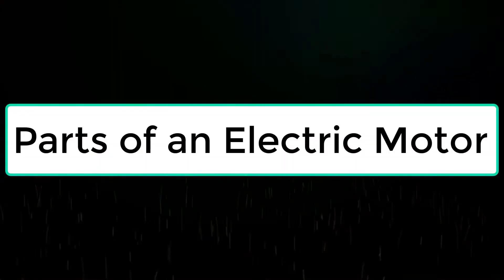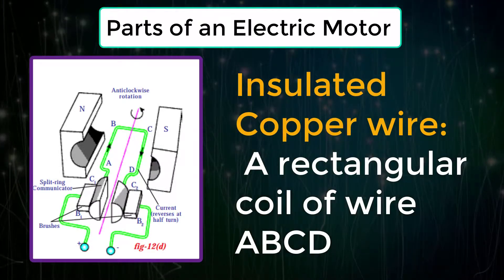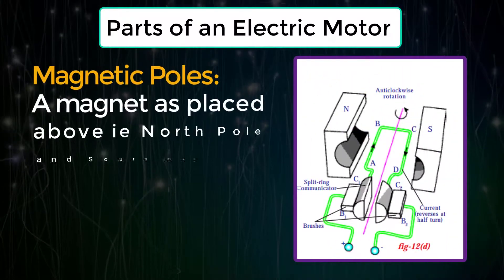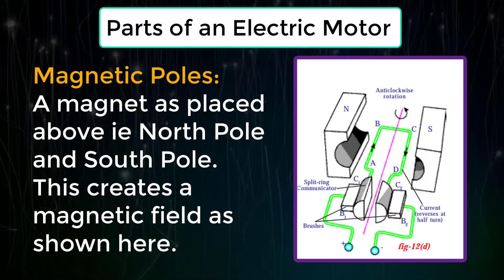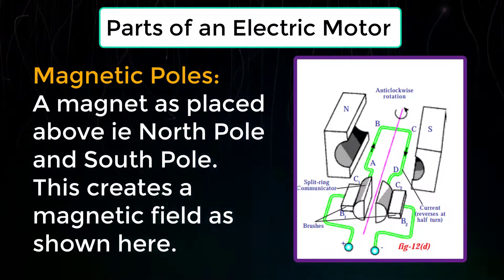Parts of an electric motor: Insulated copper wire forms a rectangular coil of wire. Magnetic poles: A magnet is placed above, that is north pole and south pole. This creates a magnetic field as shown here.